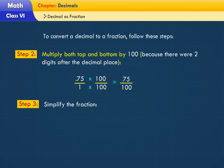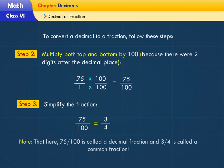Step 3: Simplify the fraction. Here, 75 upon 100 is called a decimal fraction, and 3 upon 4 is called a common fraction.